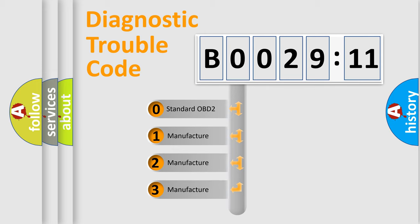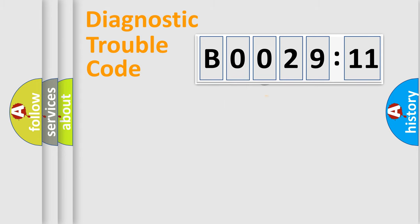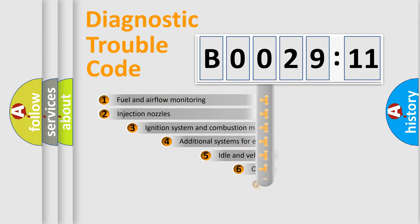If the second character is expressed as zero, it is a standardized error. In the case of numbers 1, 2, or 3, it is a more prestigious expression of the car-specific error.